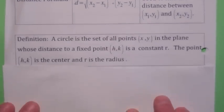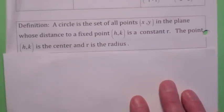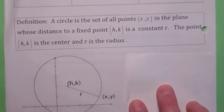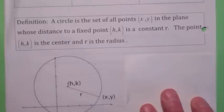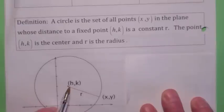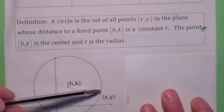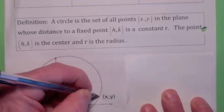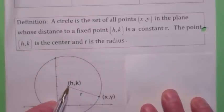We define a circle to be the set of all points in the xy plane — the set of all points xy — whose distance from a fixed point hk is a constant, and we call that constant r. R is called the radius, hk is called the center, and xy can be any point on the edge of the circle. The way we derive the equation of the circle is to use the distance formula: what is the distance from any point xy on the outer edge of the circle to the center hk? Well, isn't it r?